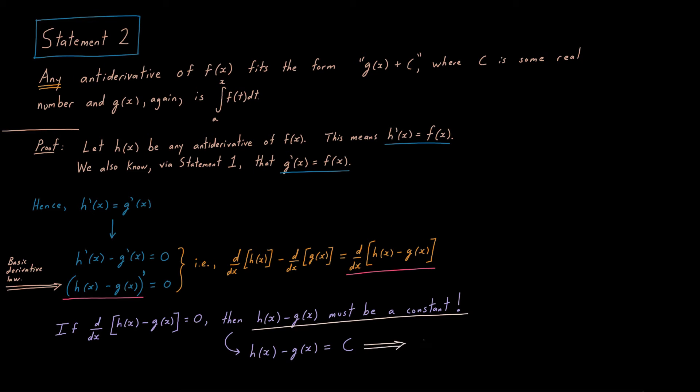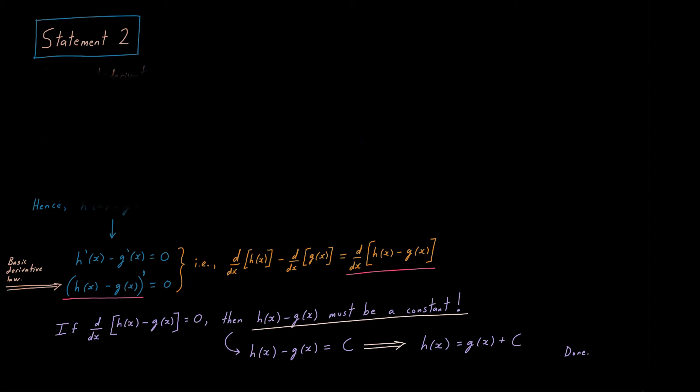Therefore, h minus g is c, and we conclude, friends, that h equals g plus c. Boom. We're done. Now, that may have seemed trivial, but that's going to play a key role in statement number three, the final statement we need to prove, and it's the most aesthetically pleasing one. And I'm going to hold off on telling you what it is, because it's really quite special. We're going to leave it vague for now and just run through some lines of thought.